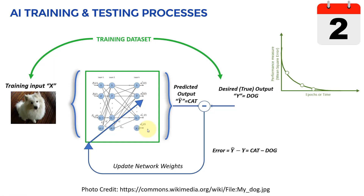Similar to humans — we don't learn in one shot, it takes time, and we learn through trial and error and experience. In AI training, we train over a series of what we call epochs — multiple iterations where we show the data to the model, update the weights, and get better over and over again. At epoch one we have a very large error, and over time the error goes down until it's reduced dramatically. Then we stop training — and that's how you train AI models in a nutshell.